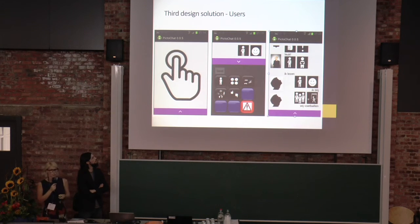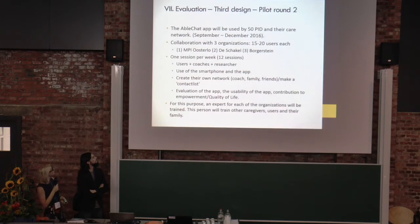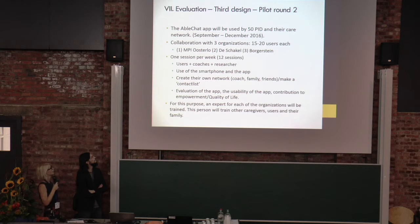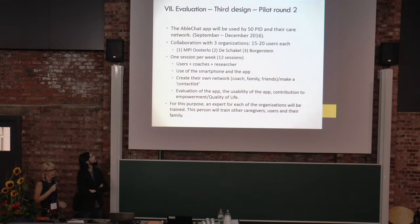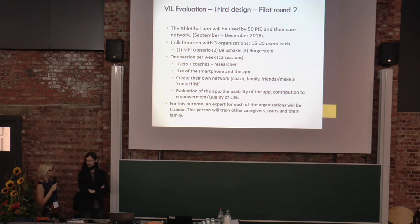Here you can see the updated user app, which is quite similar to the first version but now shows a list of received and sent messages with a picture of the sender. The new AbleChat app will be used by 50 people with intellectual disabilities across three organizations with 15 to 20 users each. There will be one training session per week with users, one coach, and one researcher. We will help users learn to use the smartphone and app, create their own network and contact list, and evaluate the app's usability as well as its contribution to empowerment and quality of life.